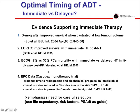The ECOG study by Messing, post-radical prostatectomy in node-positive patients — only 100 patients — but strongly supported, showed that overall survival and prostate cancer mortality were significantly improved when castration was added early post-surgery as opposed to waiting until metastatic progression, illustrating that early hormone therapy prolongs survival in that population.